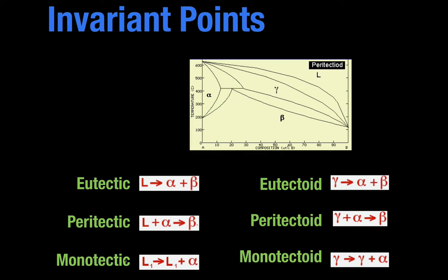There are some others: monotectics and monotectoids, where you go from a liquid to a different phase of liquid, or a gamma to gamma plus alpha. And I'll show you what these look like, but we're not going to worry about these because they're not going to show up in anything we do in this class. But you can learn more about them later.